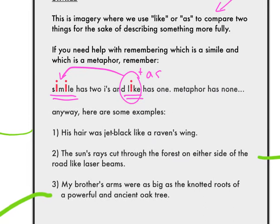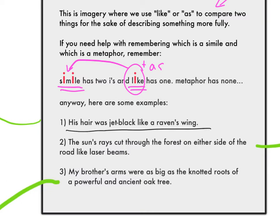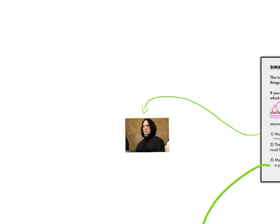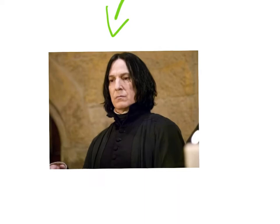Back to simile. Here are some examples. 'His hair was jet black, like a raven's wing.' Who could I be talking about? Nobody else except that evil guy you love to hate, because he actually isn't that evil — spoiler alert — Severus... Professor Snape.